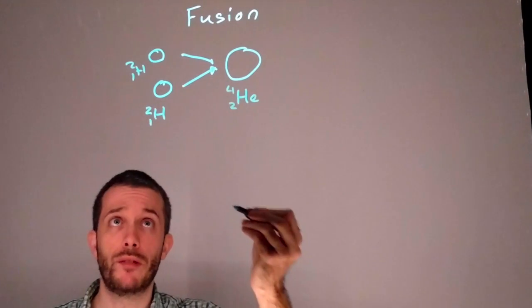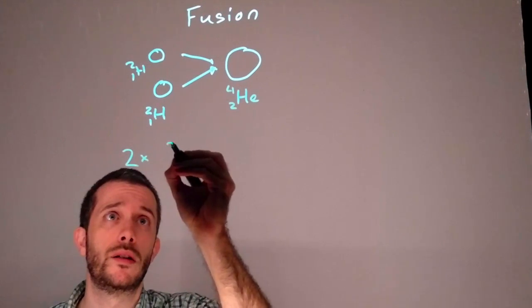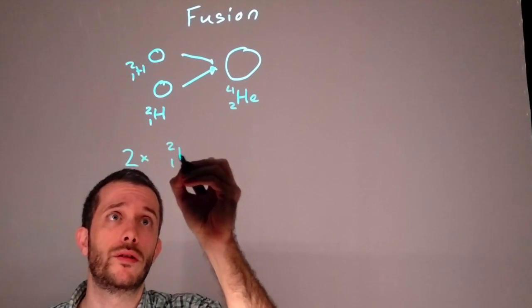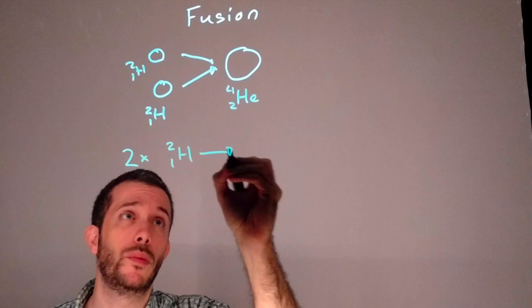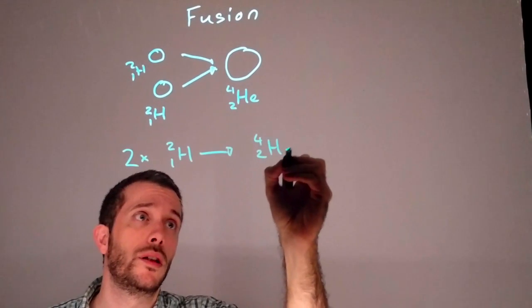If you write down the nuclear equation for this you would have two times the hydrogen 2 will become one times helium 4.